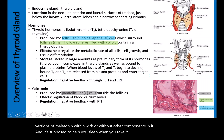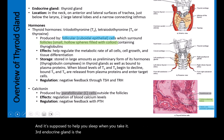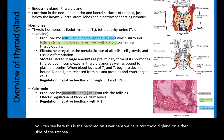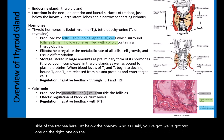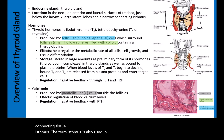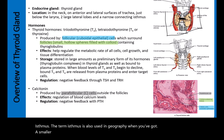The third endocrine gland is the thyroid gland, located in the neck. We have two thyroid glands on either side of the trachea, just below the pharynx — one on the right and one on the left — connected by an isthmus. An isthmus is a connecting tissue; the term is also used in geography for a smaller piece of land connected to a larger piece of land.